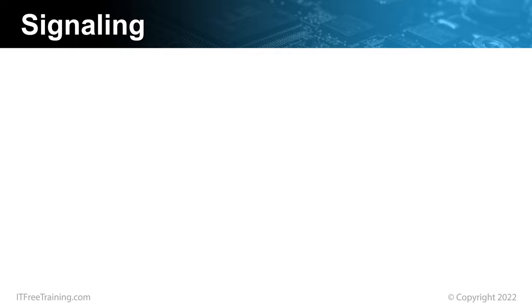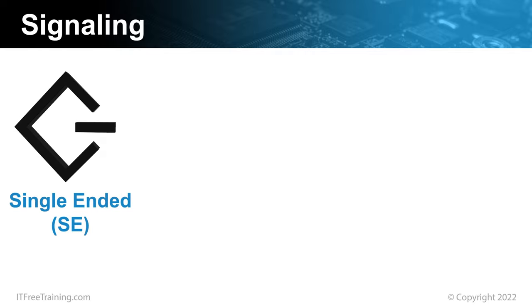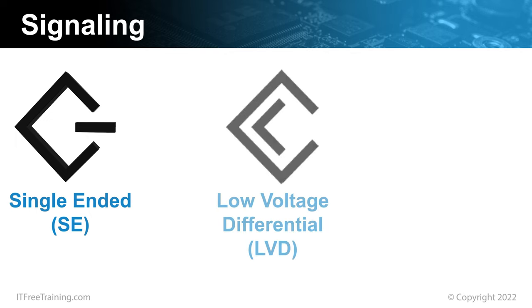SCSI has three different types of signaling. The first is single-ended, or SE. This was the first signaling type used by SCSI. If you are working on an old Apple computer, it is most likely using this connector. In some cases, the cable or plug will be labeled with SE. The next signaling type is low-voltage differential, or LVD. This worked similarly to SE in that it uses two wires — one data wire and one ground wire for each bit of data that is transferred. Having multiple groups of two wires allows data to be transferred in parallel.